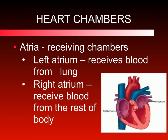The heart is divided into four chambers. The two upper chambers are called the atria, or singularly the atrium, and they are the receiving chambers, which means they receive blood from outside. The left atrium receives blood from the lungs, which is highly oxygenated. The right atrium receives blood from the rest of the body and it is low in oxygen.